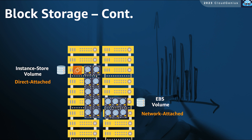Which one of them do you think would offer storage to the server with less latency — EBS or instance store? The one that is directly attached or the one over the network? It is probably, as you have guessed, going to be the instance store that offers lower latency.